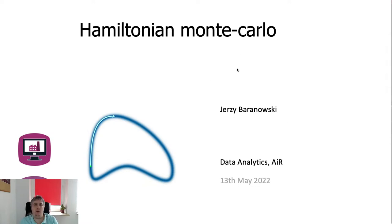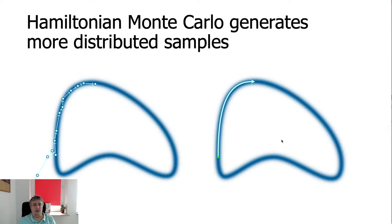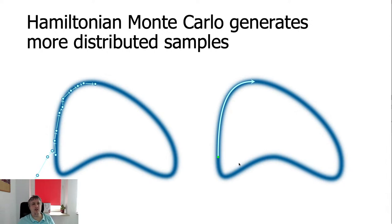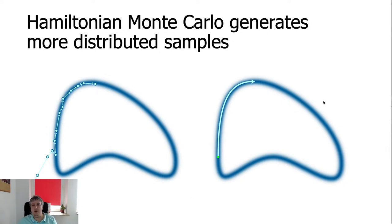What can we do about it? We can construct a more efficient algorithm that will traverse the distribution more efficiently. Traditional Markov chain Monte Carlo generates samples with small steps covering the typical set. The idea for Hamiltonian Monte Carlo is to generate samples that are not as close to each other — they have much lower autocorrelation between them — and are more spread around the typical set.